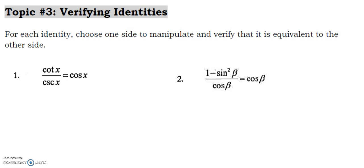Just like the last one, we're going to only pick one side to work on. Usually you want to pick the side that is more complicated and try to simplify it to match the other side. That's not an all-the-time thing, but it's the usual approach. Then you want to try to make some substitutions that will make things cancel out and get you to the side you're trying to reach.